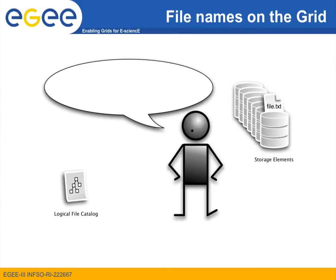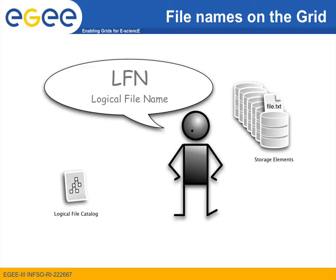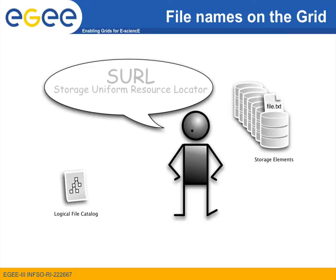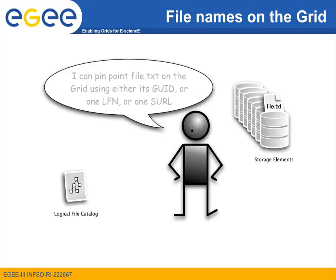We can refer to a grid file in several ways. The most commonly used ones are the GUID of the file, which stands for its Grid Unique Identifier; the LFN of the file, which stands for Logical File Name; and the SURL of the file, which stands for Storage Uniform Resource Locator. Notice that while we may use several Logical File Names and SURLs to refer to a file, there can be only one Grid Unique Identifier to relate to that file.